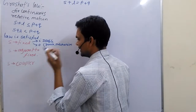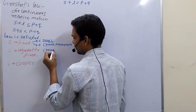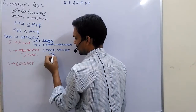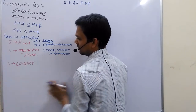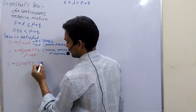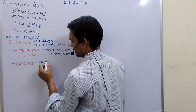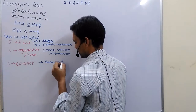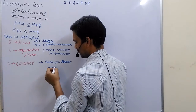If the smallest link is adjacent to the fixed link, then we obtain a crank-rocker mechanism. If the smallest link is at the coupler position, then we obtain a rocker-rocker mechanism.